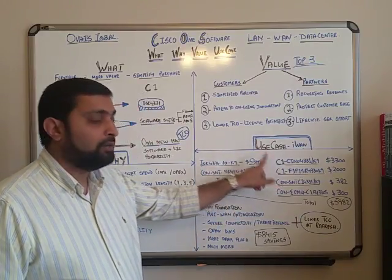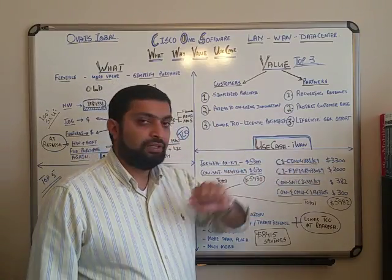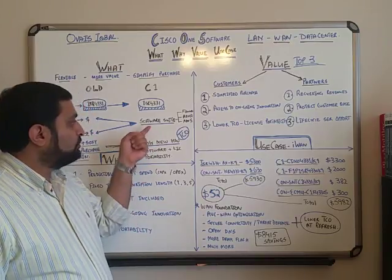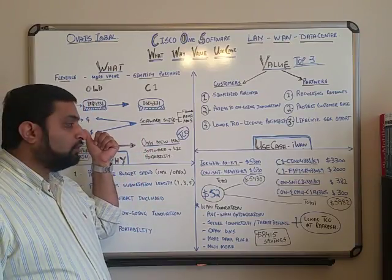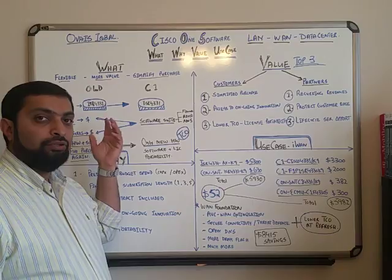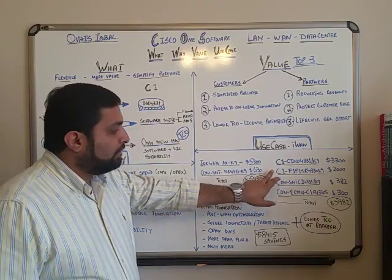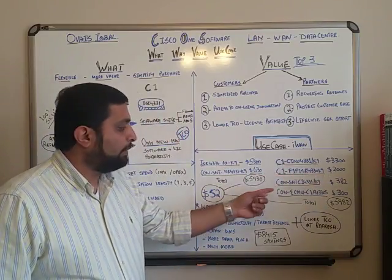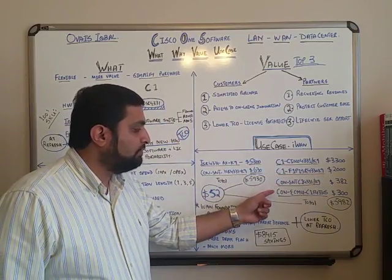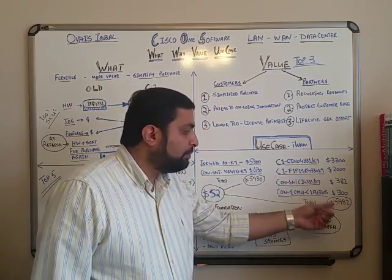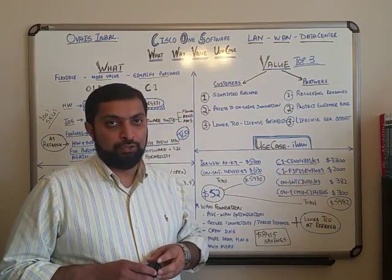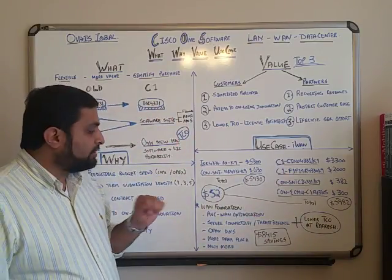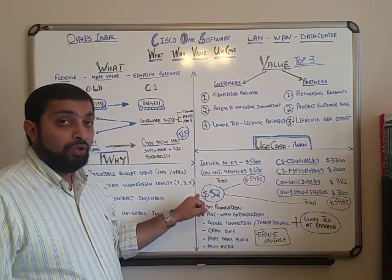In the C1 route, instead of selecting bundles of unified communications, security, or IOS features, we are selecting C1 Foundation for Wide Area Network at $2,000. Then we add SmartNet for the box, and SwSS for the C1 foundation. The total price comes to $5,982. Look at the difference — $5,982 versus $5,930. How much extra are you paying? Only $52.